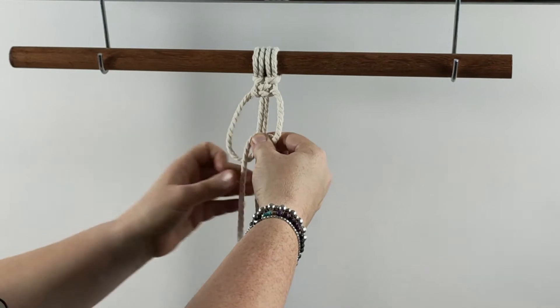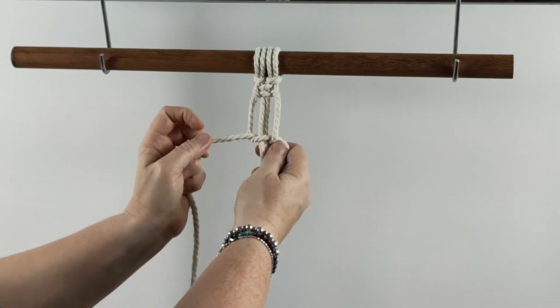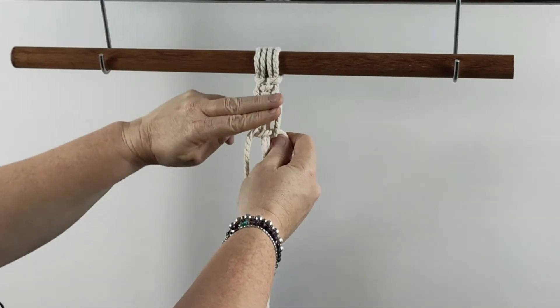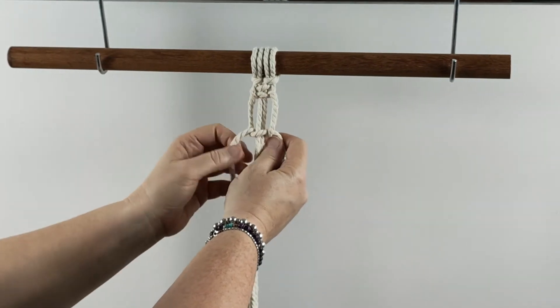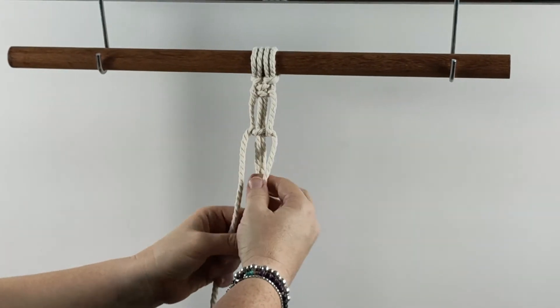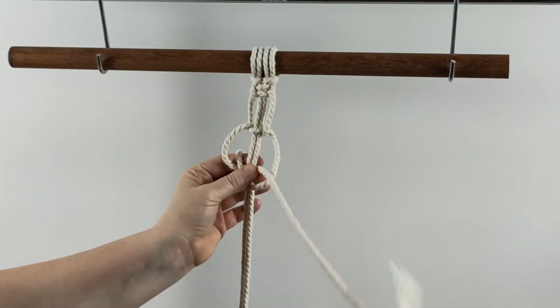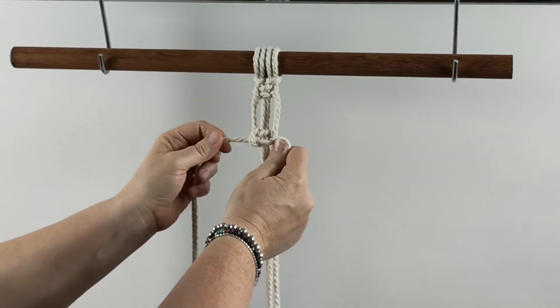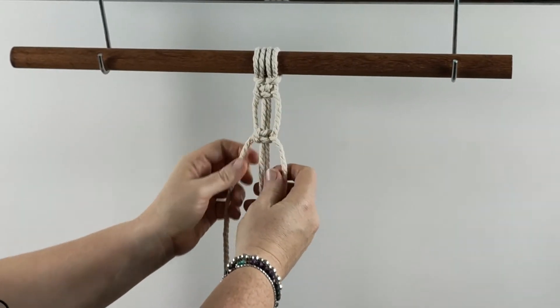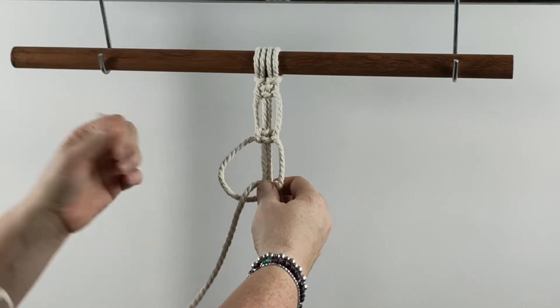So in this one I'll drop down a couple of centimeters, maybe two finger widths, and I'll do a second square knot and again drop down the same distance.